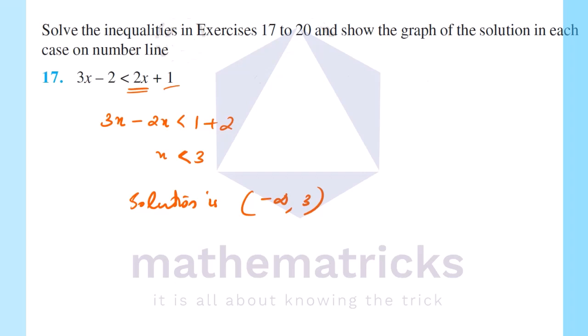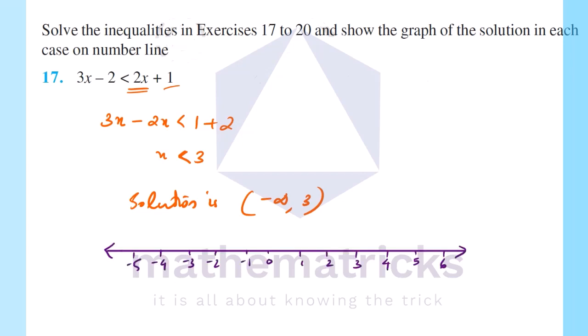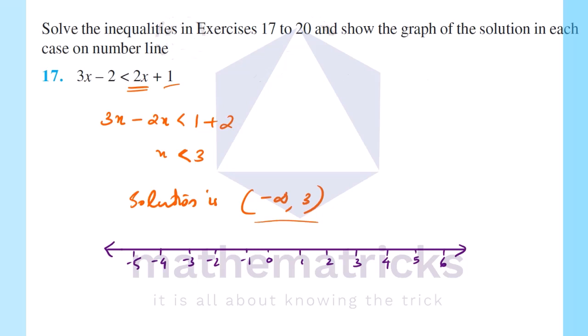Let's take the graph. On the number line, we mark the solution. We mark the value 3 on the number line. Since x is strictly less than 3, the point 3 will be open (not shaded). The region to the left of 3 will be shaded. This is the answer.